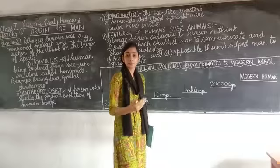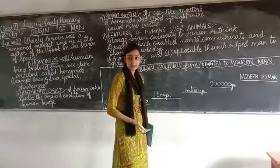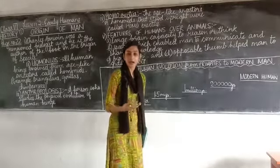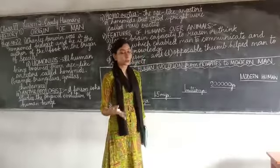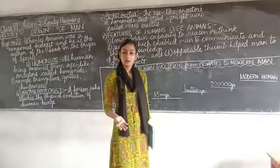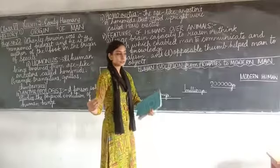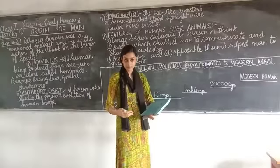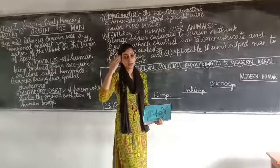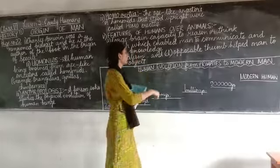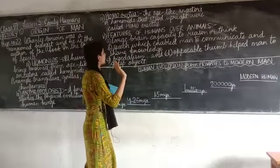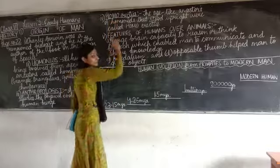Animals which we tame at home are called domestic animals — like cows and dogs. Lions and tigers are wild animals. We are social animals: we meet each other, we communicate, we are able to reason, we are able to think.